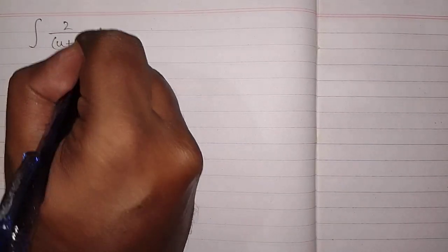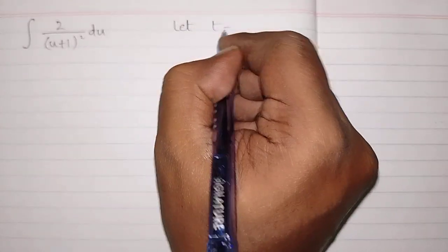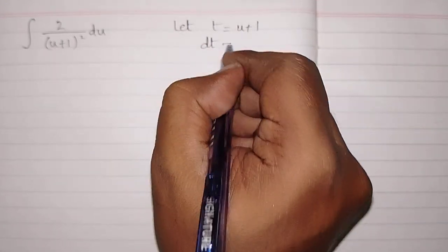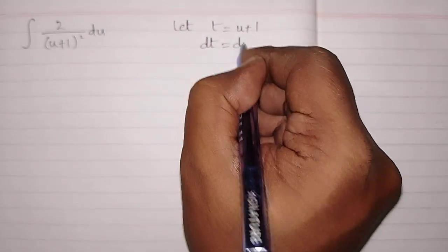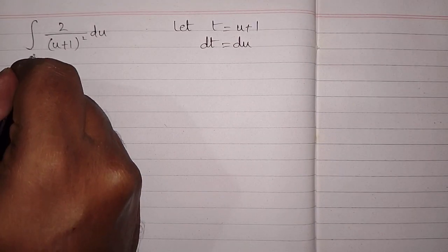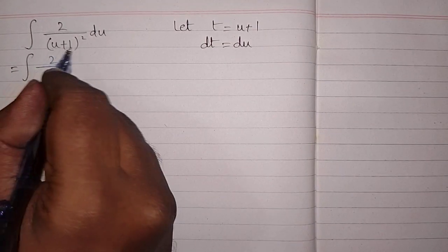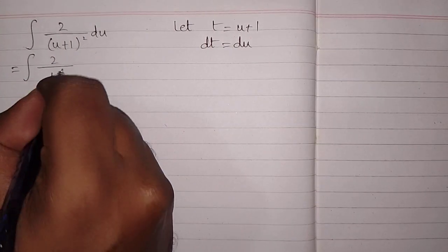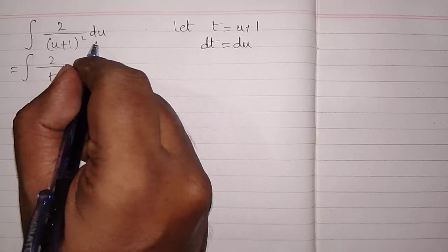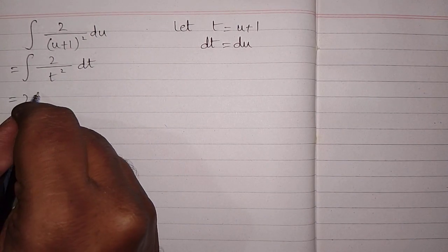Now let t equal u plus 1, so the differential dt is equal to du. This integral can be written as the integral of 2 upon t squared dt, since in place of u plus 1 we write t and in place of du we write dt.